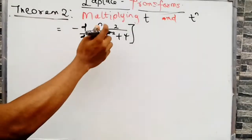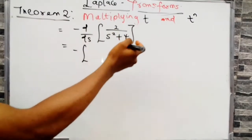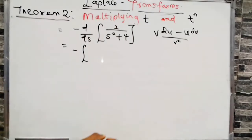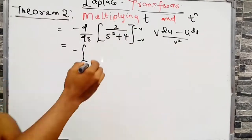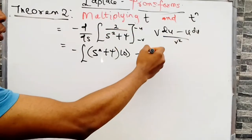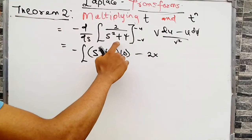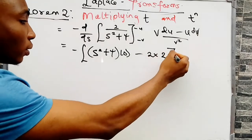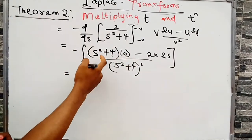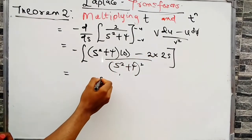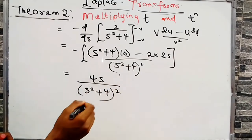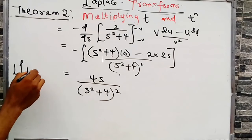Using the quotient rule with u = 2 and v = s²+4: the derivative is (v·du - u·dv) divided by v². Since du = 0 (constant) and dv = 2s, we get: minus times [0 minus 2·(2s)] divided by (s²+4)². The minus signs cancel to give plus 4s, so the answer is 4s divided by (s²+4) squared. This is the Laplace of t·sin(2t).